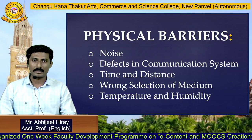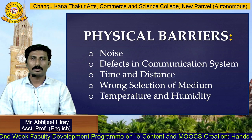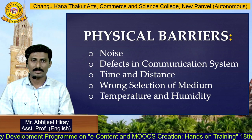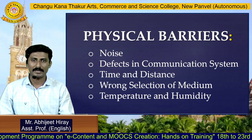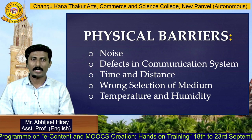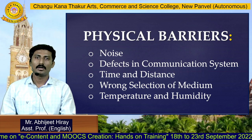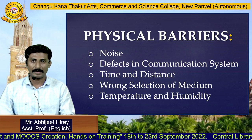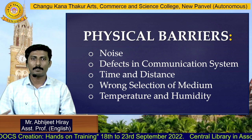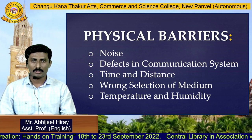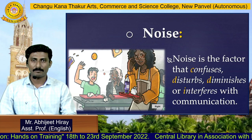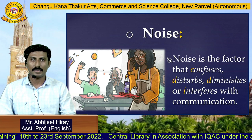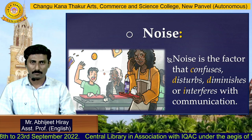Physical barriers include noise, defects in the communication system, time and distance, wrong selection of medium, and temperature and humidity. Physical barriers are also called environmental barriers. We will now discuss how noise becomes an obstacle in the process of communication.